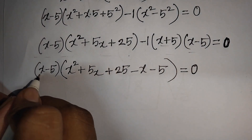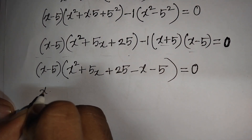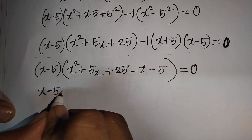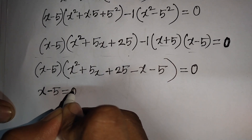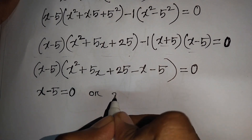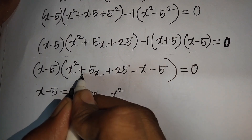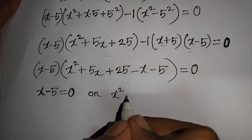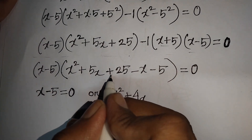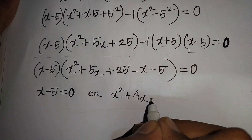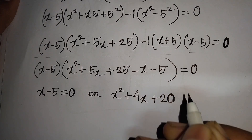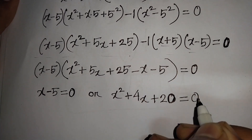Now we write: (x - 5) = 0, or x² + 5x - x, which means plus 4x, then plus 25 - 5, which means plus 20, equal to 0.